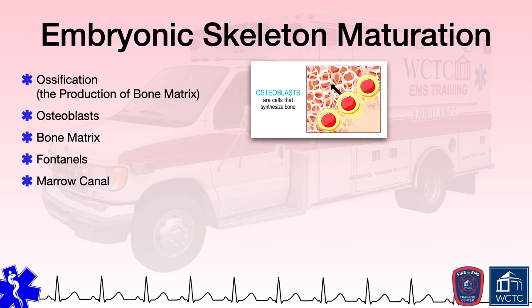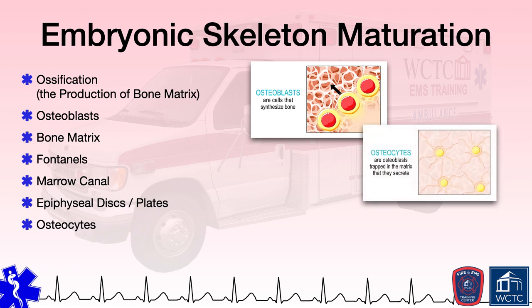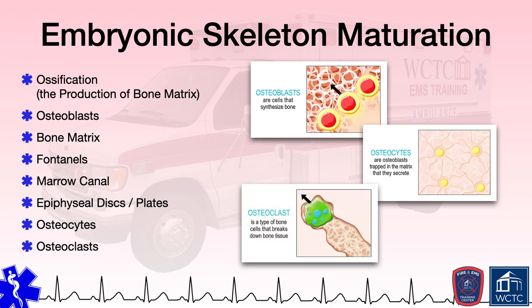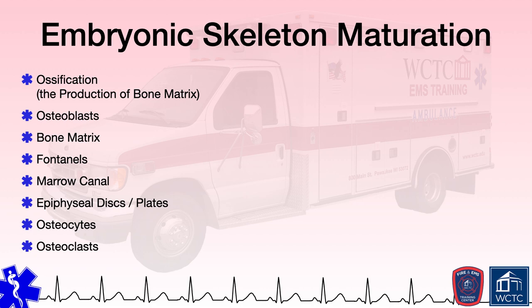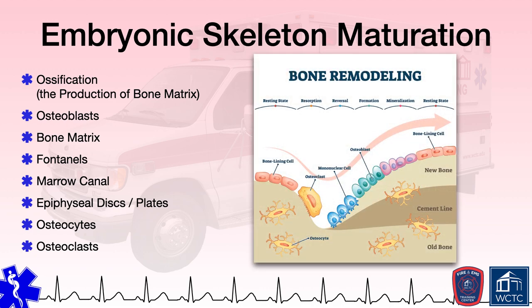One component of long bones is epiphyseal discs or plates, also referred to as growth plates. These are layers of hyaline cartilage in long bones between the epiphysis and the diaphysis where bone growth occurs, typically through adolescence. As bone is created and osteoblasts become trapped in the bone matrix, many become osteocytes, which are specialized bone cells that move nutrients and waste through the matrix. Another important bone cell is the osteoclast, which breaks down bone tissue through the release of enzymes that dissolve minerals, releasing calcium and phosphate into the bloodstream. These cells work in concert with osteoblasts to maintain normal remodeling of bone—removal of old bone and creation of new bone over a person's lifetime—helping regulate calcium homeostasis, repair micro-damage, and shape the skeleton during growth.